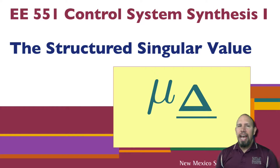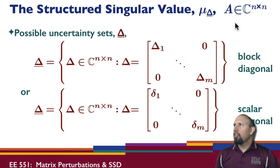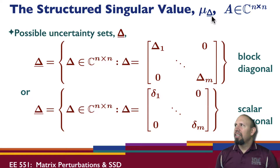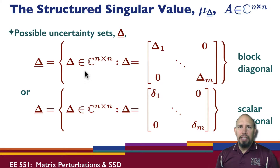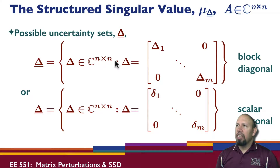We're looking at the structured singular value, denoted as μ with a subscript Δ-underbar, for some matrix A that is in general n×n. We're assuming A is an n×n matrix, possibly complex, and we're defining μ. So what is μ? μ is associated with our uncertainty set Δ-underbar. Our Δ-underbar is the set of possible deltas — in this case, deltas that are n×n matrices such that delta is block diagonal, or delta could be the set of complex n×n matrices where it is diagonal with scalars along the diagonal, not blocks.